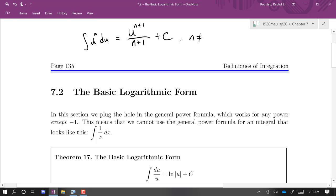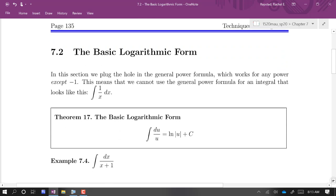And this works as long as n is not equal to negative 1, because if n is negative 1, then we would be dividing by 0 here in the result. So in this section, we're going to patch up that hole that we have in the power rule. And that brings us to the logarithmic form.